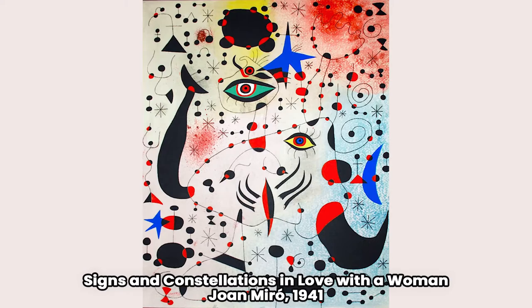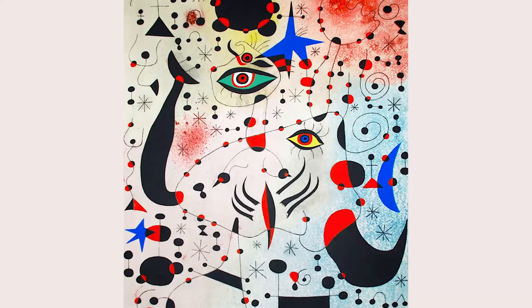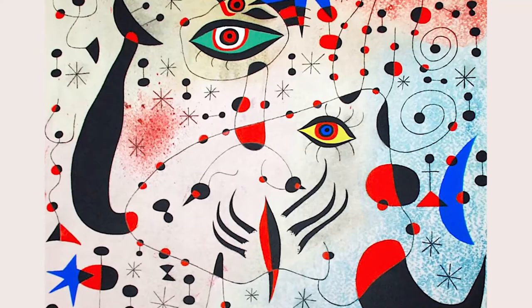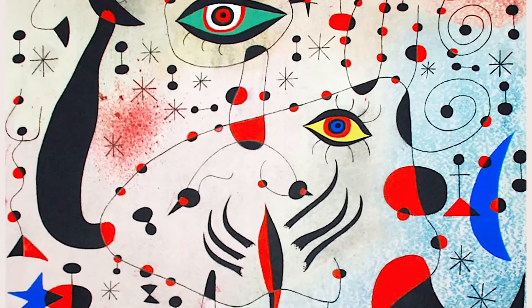Signs and Constellations in Love with a Woman — artwork by Joan Miró from the year 1941. One of the paintings that are part of the Constellation series painted by Miró between 1939 and 1941. In this series of 23 paintings, we see Miró's characteristic naive style, with which the artist seeks to delve into the depths of the human subconscious and offers us his particular vision of reality full of symbols and colors.